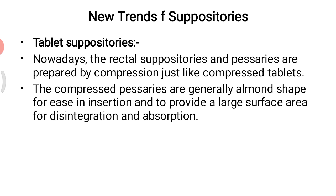In tablet suppositories, rectal suppositories and pessaries are now prepared by compression just like compressed tablets. The compressed suppositories are generally almond-shaped for ease of insertion and to provide a large surface area for dissolution and absorption. The rectal tablets are generally coated with polyethylene glycol for protection and ease of insertion into the rectum.